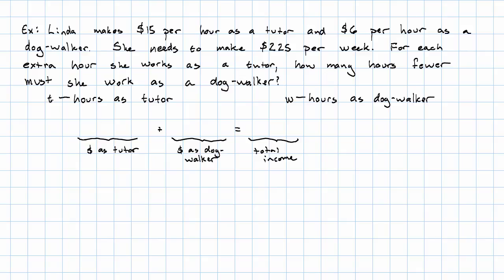As a tutor, if she works for T hours at $15 per hour, she'll make $15T dollars. As a dog walker, if she works for W hours at $6 per hour, she'll make $6W dollars. And she wants her total income to be $225.